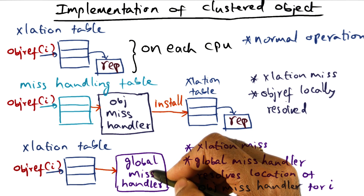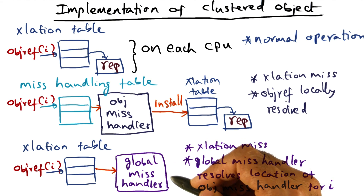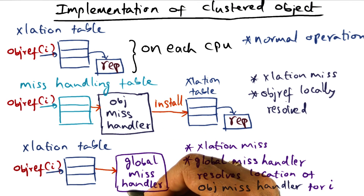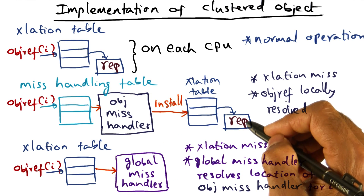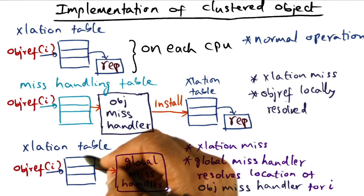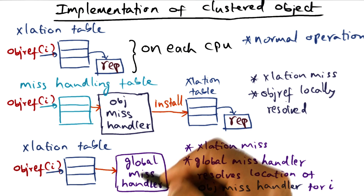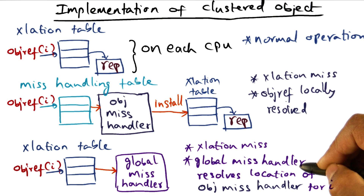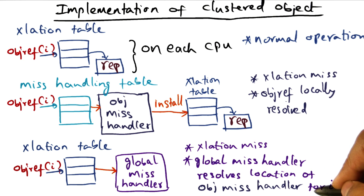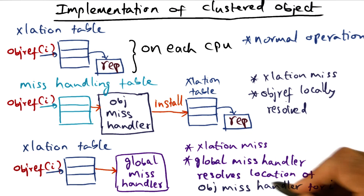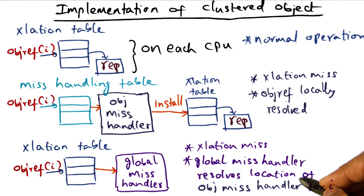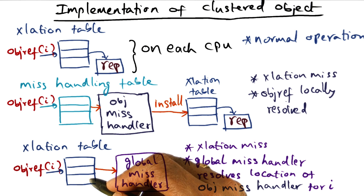And the global mishandler, because it is replicated on every node, knows exactly which node has the mishandling table that corresponds to this object reference. So it can go to that node and obtain a replica. Once it obtains a replica, it can populate it in the translation table for this particular node. Once it populates it, then we are back in business again. So the function of the global mishandler is to resolve the location of the object mishandler for a particular object reference. Given an object reference, if you have no way of resolving it locally, then the global mishandler present on every node can tell you the location of the object mishandler for this particular object, so that you can resolve that reference, get the replica for it, install it locally, populate the translation table, and then you're back in business again.